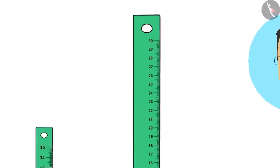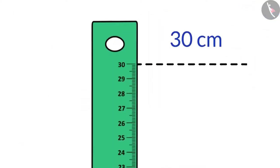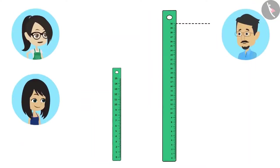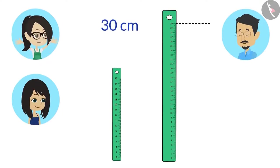Papa, it has a mark up to 30 centimeters on it. That means it can measure objects up to 30 centimeters in length, right? Absolutely right.